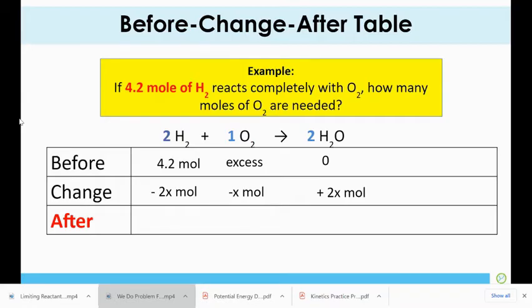Coefficient and then X. So notice, let's summarize that up. Reactants get a negative sign. Products get a positive sign. Put the coefficient for each substance down and then put an X.